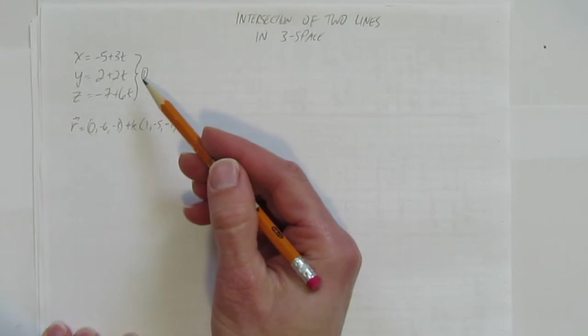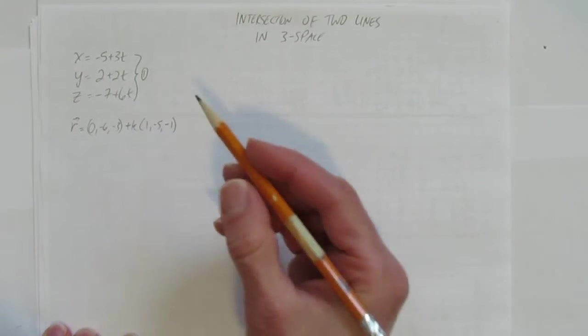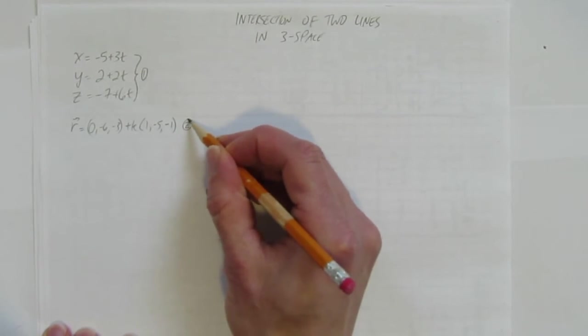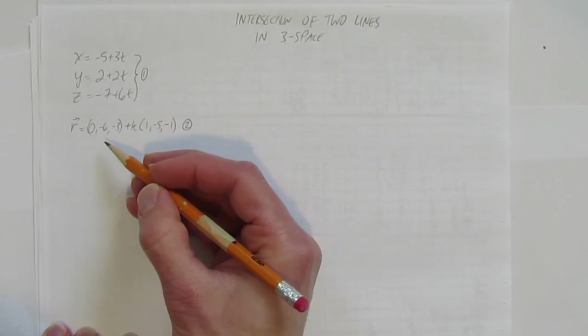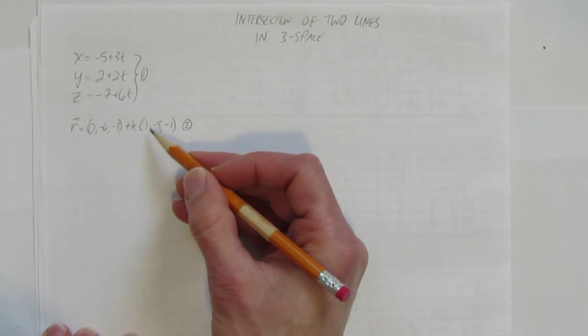All those are the pieces of one equation, a parametric equation of a line. The second equation here, I'll label that equation 2, is a vector equation: (0, -6, -3) plus k(1, -5, -1), direction vector and a point.